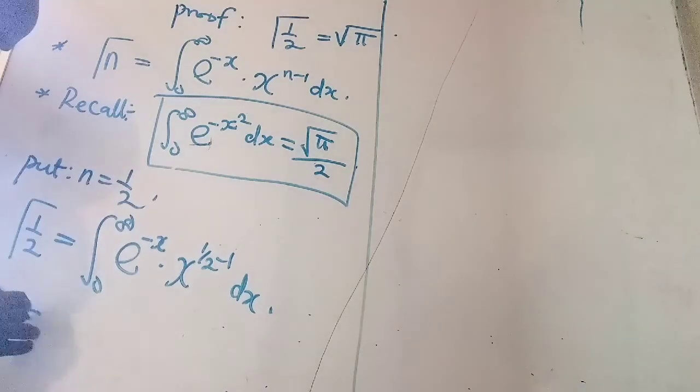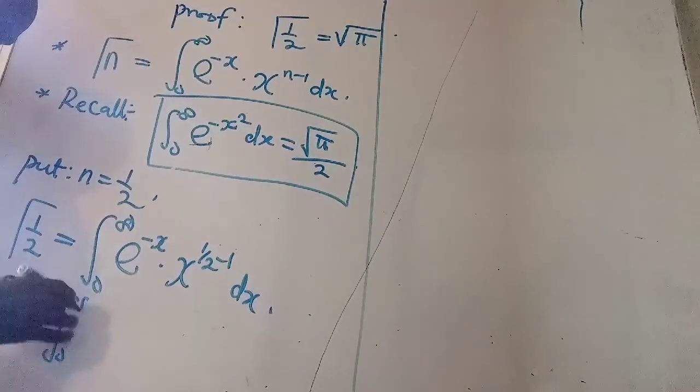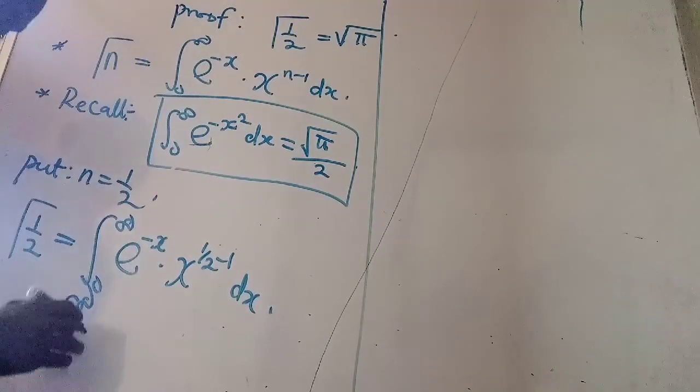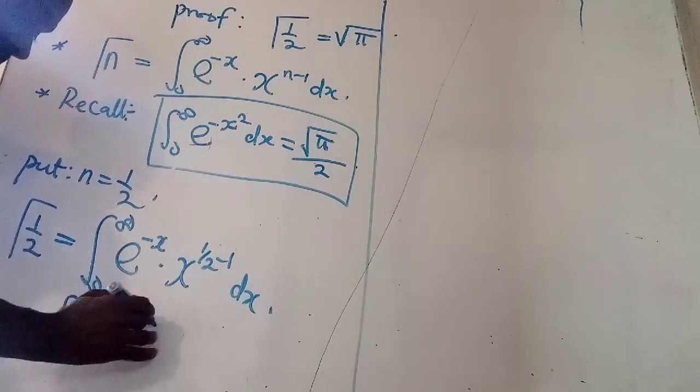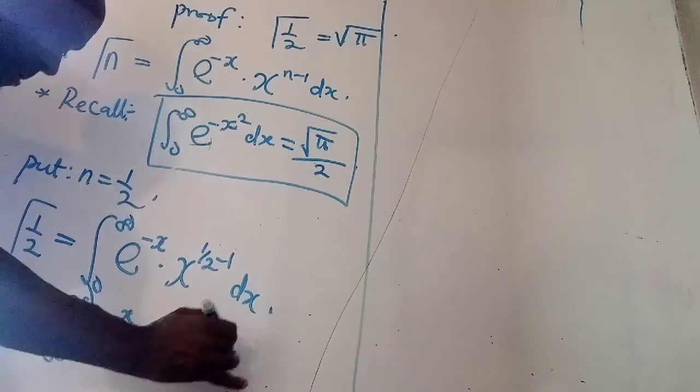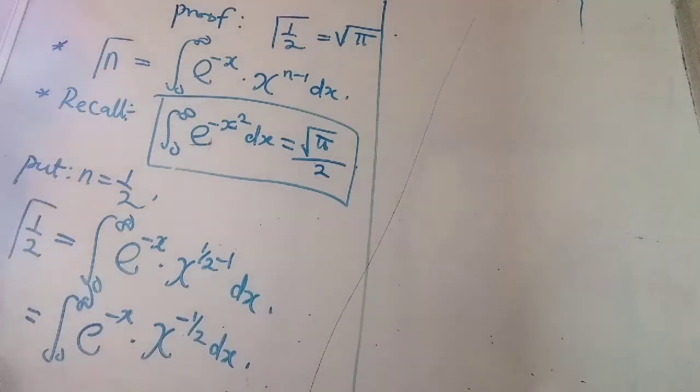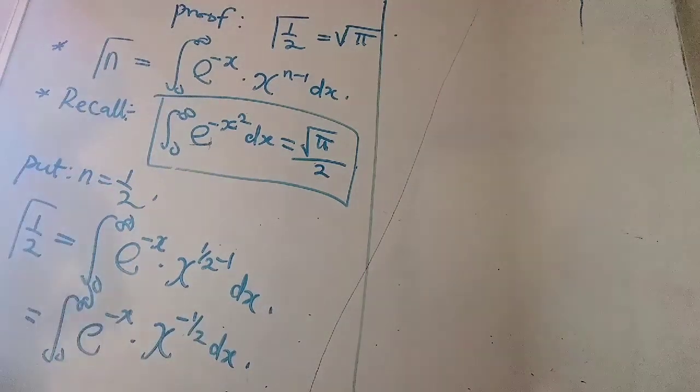So, definitely, that will give us integral from 0 to infinity e to negative x multiplied by x raised to power minus half dx. All right, that is the first phase. What's next?